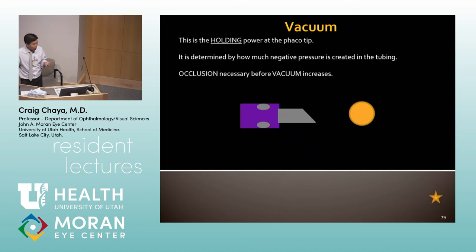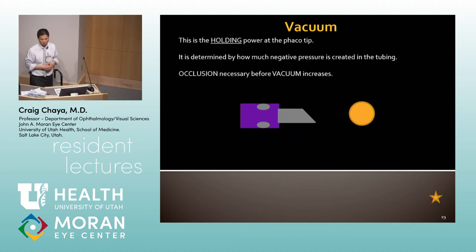There are a few FACO machines on the market that have both peristaltic and Venturi settings, which is amazing — during cortex removal you can be in the center of the eye, press on the pedal, and the cortex just comes right to your tip. Most of our machines are just peristaltic for FACO.